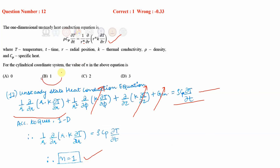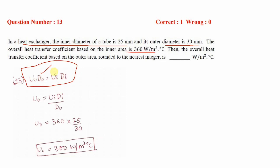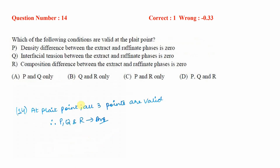In the next question, a heat exchanger has inner diameter 25 mm and outer diameter 30 mm, and the overall heat transfer coefficient based on the inner area is given. We need to find the overall heat transfer coefficient based on the outer area using the relation: U0/Ui = Di/D0. Substituting the known values of outer diameter, inner heat transfer coefficient, and inner diameter gives the outer heat transfer coefficient as 300 W/m²·°C.